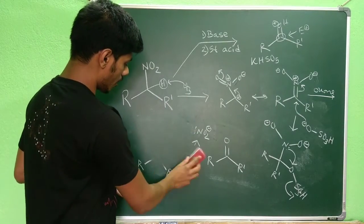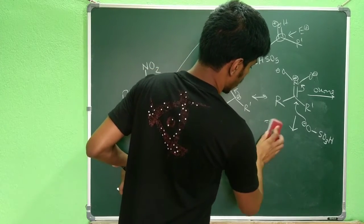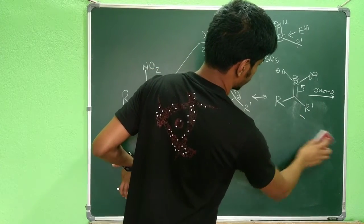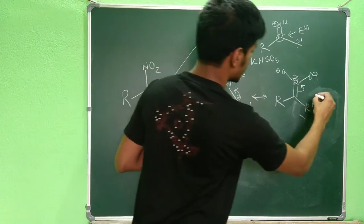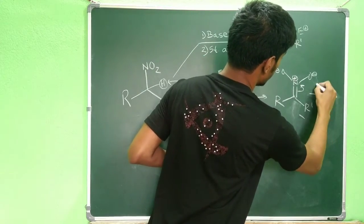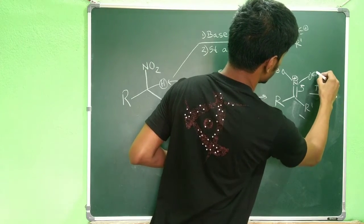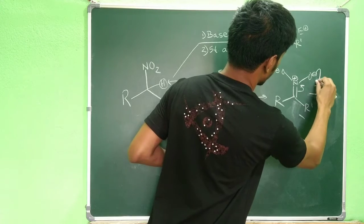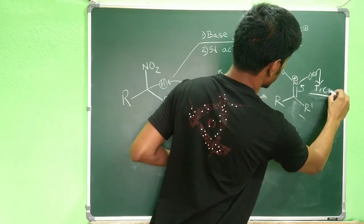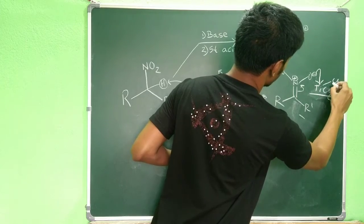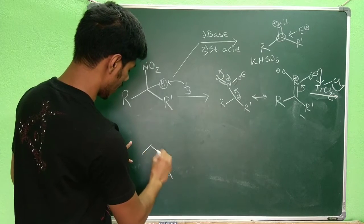Now let us discuss the third mechanism which uses titanium trichloride (TiCl3). Starting from the nitronate, the O-minus attacks titanium and one chloride leaves as Cl-minus, giving a titanium-bound intermediate of the form R-N(O-TiCl2)(O-minus).